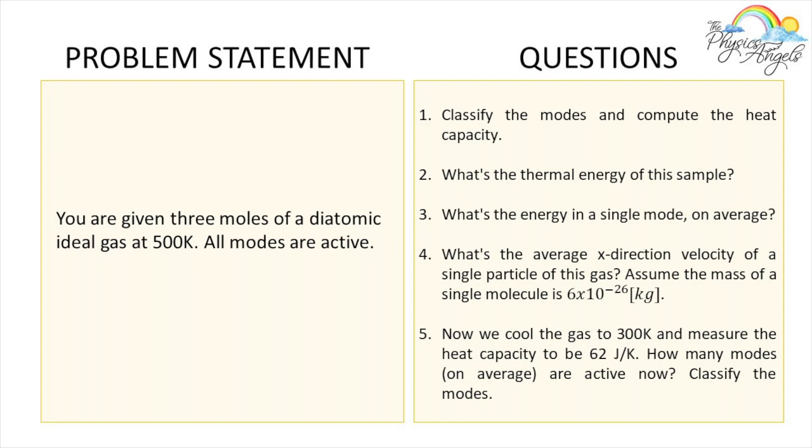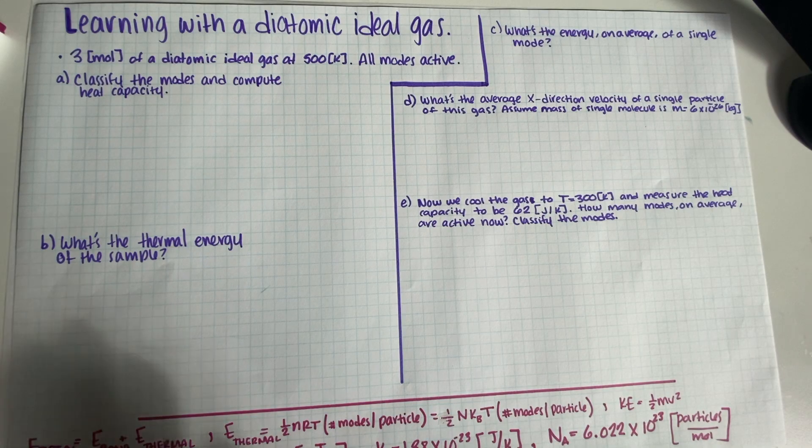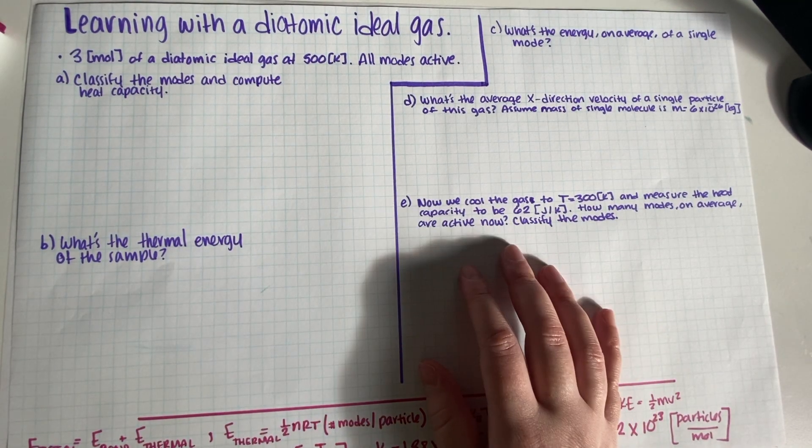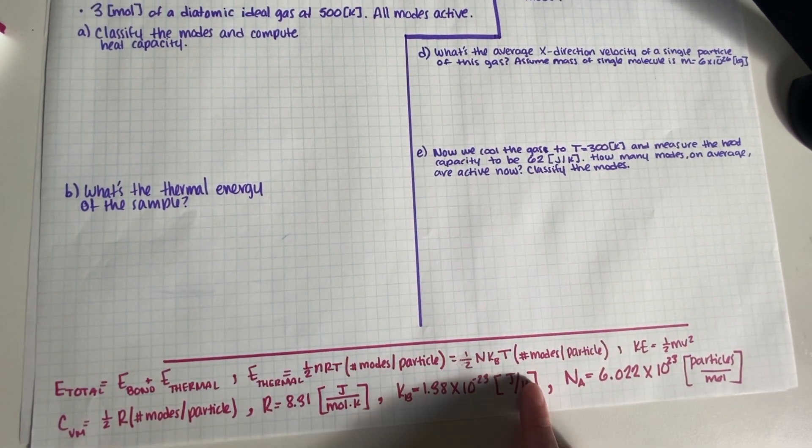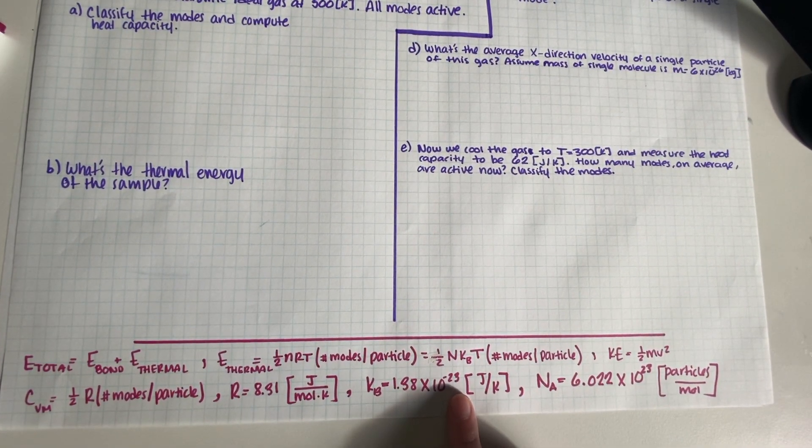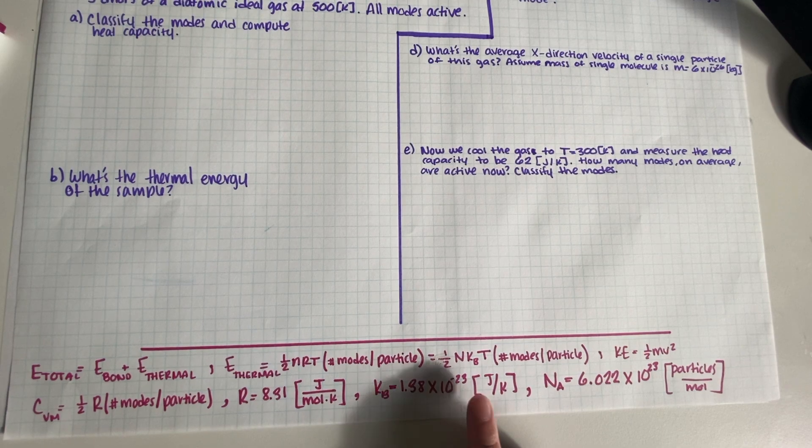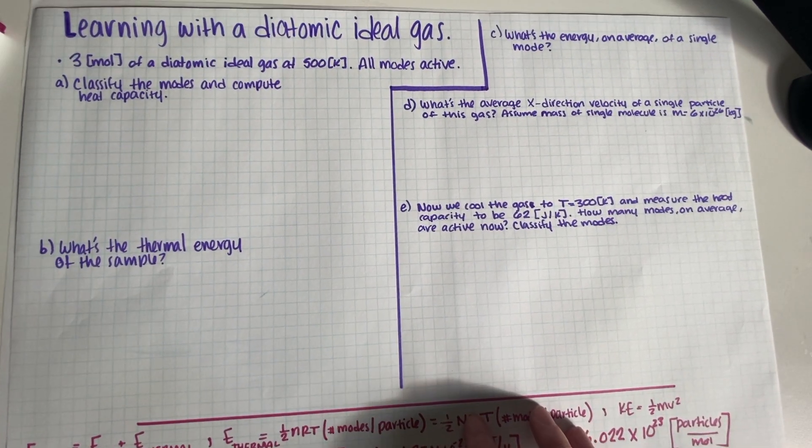We have to classify the modes, compute heat capacity, figure out the thermal energy of the sample, figure out the energy in a single mode on average, then figure out the average x-direction velocity of a single particle, and then we're going to do an experiment that involves cooling the gas. All right, so let's get started. As you can see, I have the instructions copied out, the equations on the quiz. As usual, the link to the empty PDF version of the quiz is in the description.